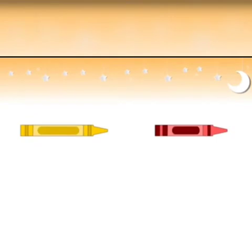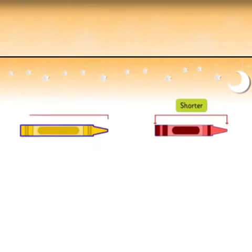Two crayons. We have the red crayon is shorter than the yellow crayon, and the yellow crayon is longer than the red crayon.